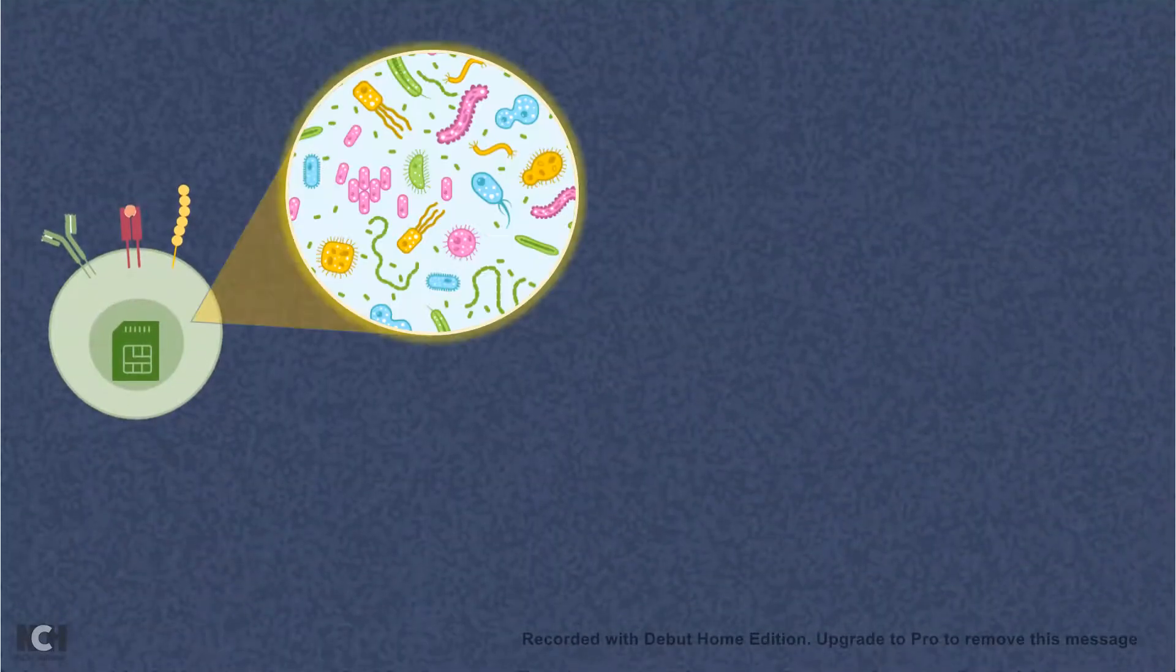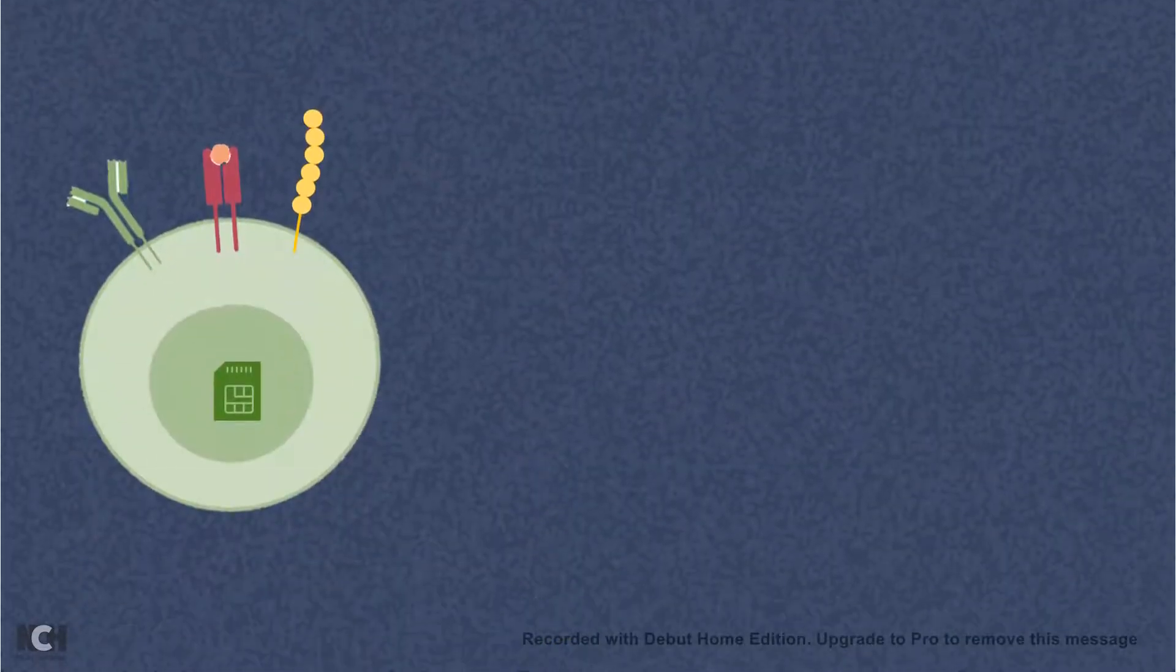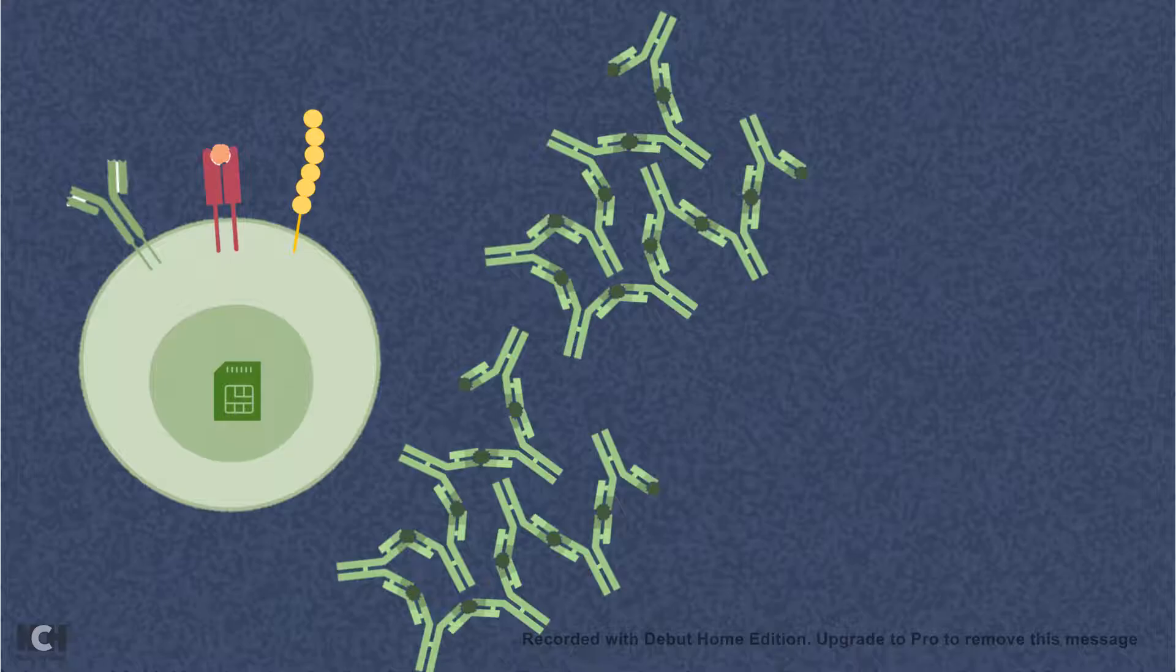The memory B cell would have a memory of which pathogen has invaded the body, what type of antigen it has encountered, and what type of antibody it has made. So next time whenever there is a similar pathogenic invasion, it would create the same isotype of that antibody really quickly. By that time, isotype switching has happened.